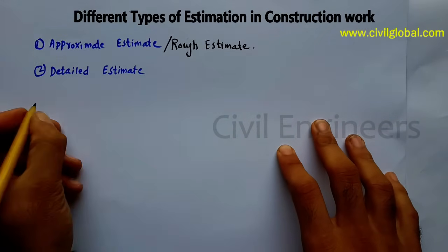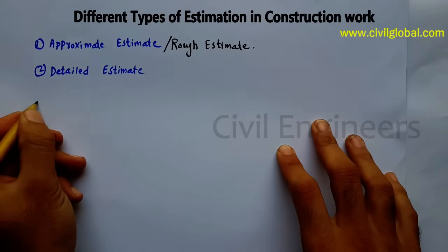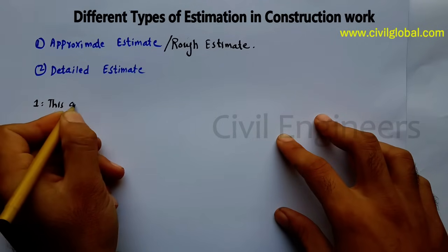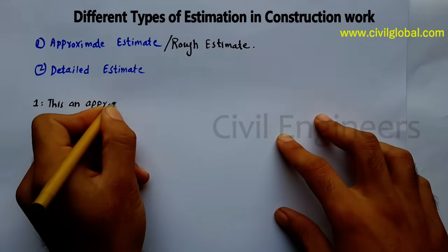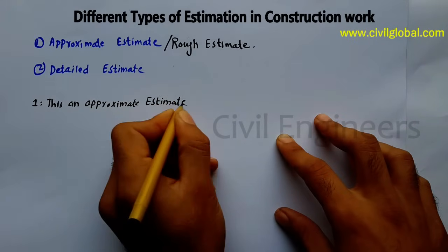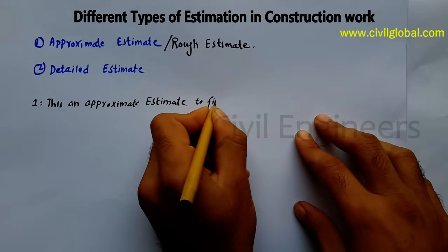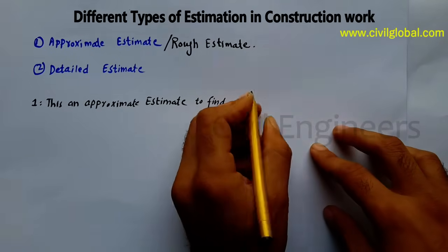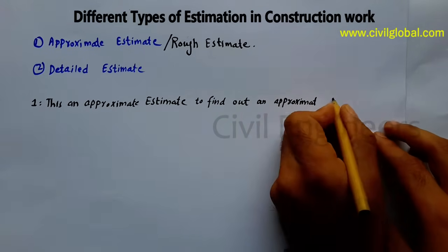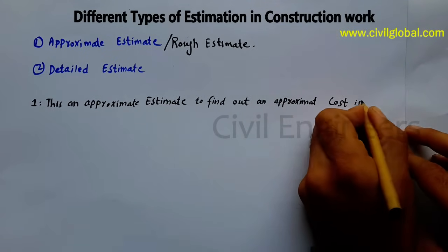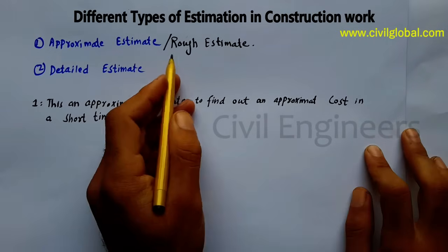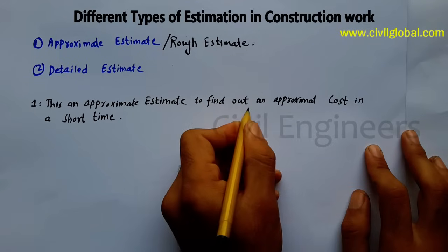Now let me define each one. The approximate estimate, also called rough estimate, is used to find out an approximate cost in a short time. This is a quick, preliminary assessment of the cost of a construction project without going into full detail.